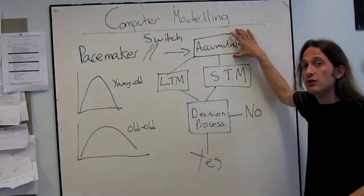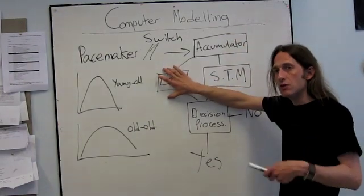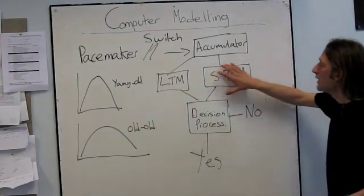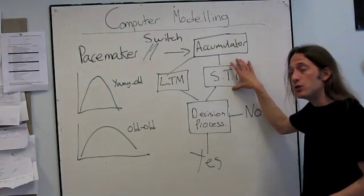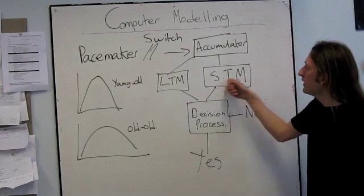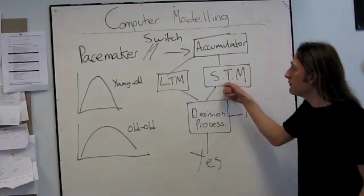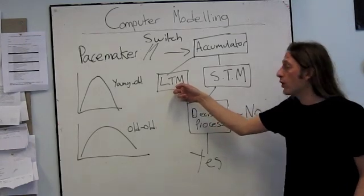If it's the standard duration, we assume it's stored in long-term memory because they're going to have to remember it over a series of several trials. We have a short-term memory store where the comparison duration is stored. Then we have a decision process that compares the comparison that the person has just been given with the standard given at the beginning of the experimental block.